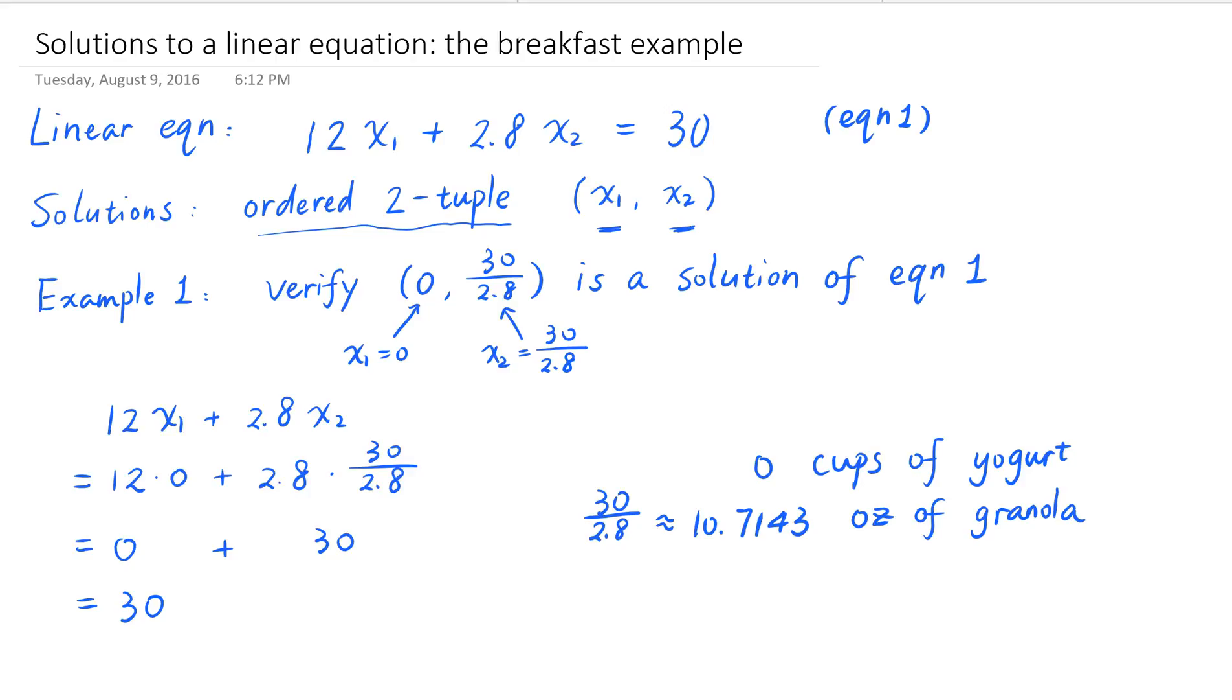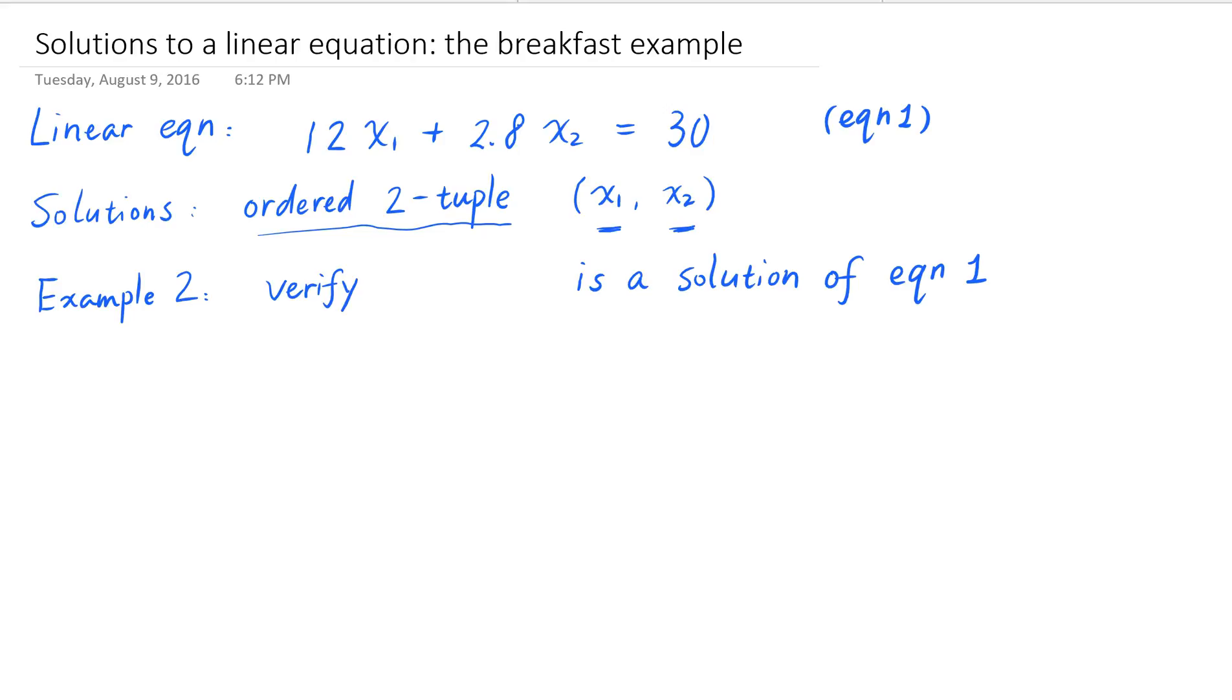In the meantime, I already figured out another solution in an extreme case. Let's verify that the 2-tuple (2.5, 0) is also a solution of this linear equation. To verify that, we see that 12 times x sub 1 plus 2.8 times x sub 2, in the case where x sub 1 is equal to 2.5 and x sub 2 is equal to 0, is equal to 12 times 2.5, which is 30, plus 2.8 times 0, which is 0, which is equal to 30. Therefore, this 2-tuple (2.5, 0) is also a solution of this equation.